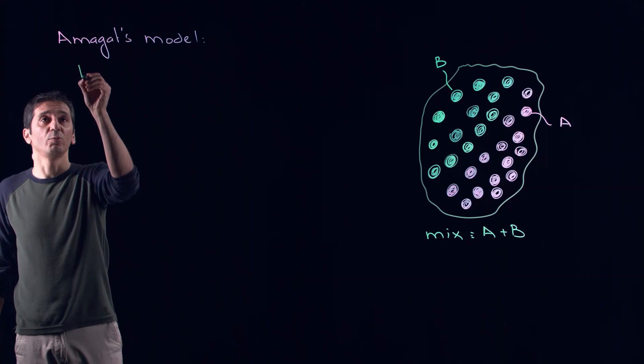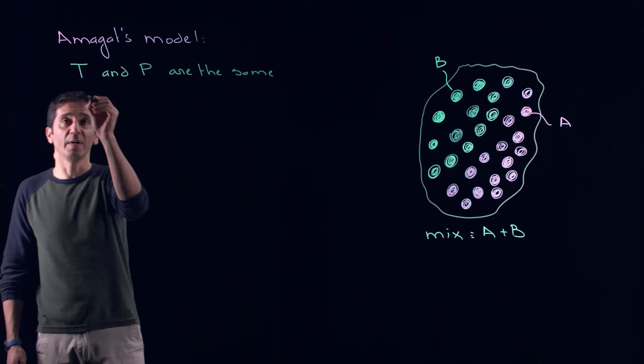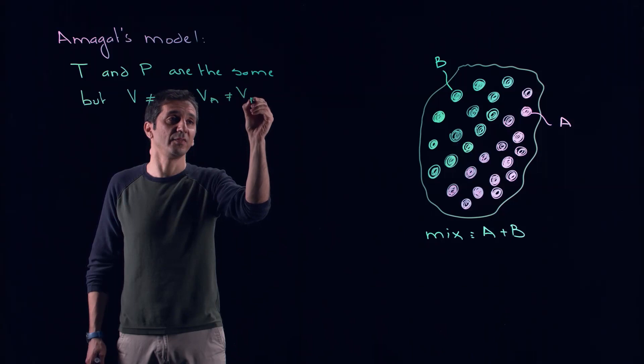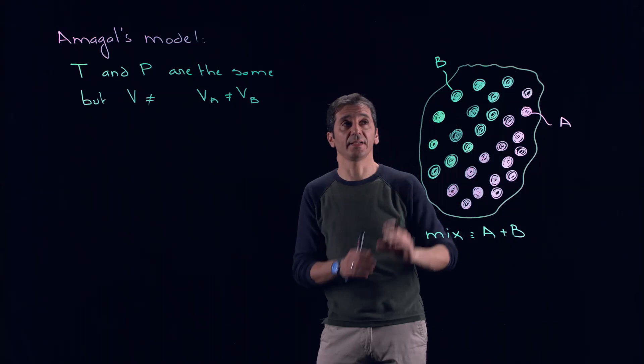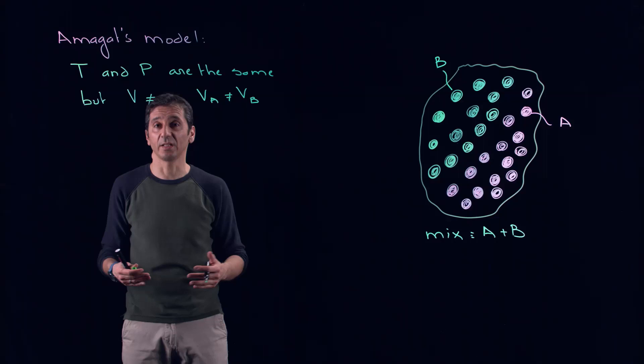In Amagat's model, the temperature and pressure are the same, but the volume occupied is different — meaning VA will be different than VB. This is kind of an extreme case where you can consider a segregation between gas A and gas B. The temperature must be the same; if the temperature is different in our mixture, we cannot fulfill thermal equilibrium and therefore cannot fulfill thermodynamic equilibrium.